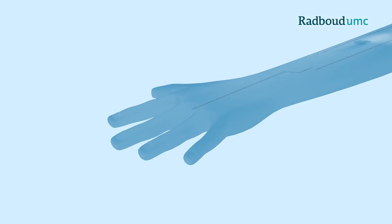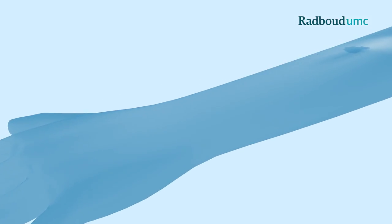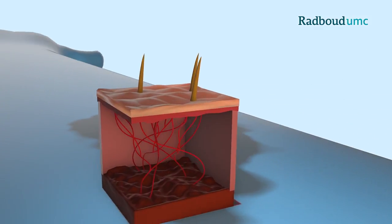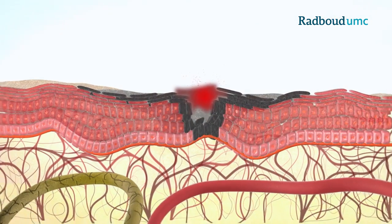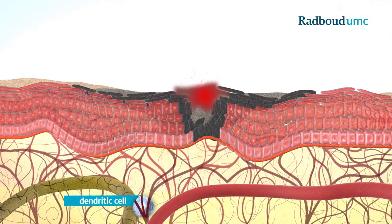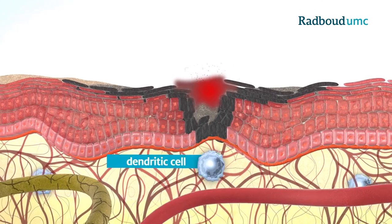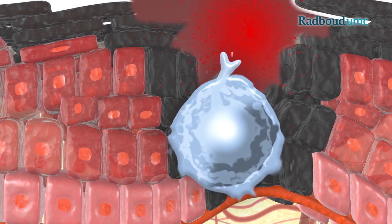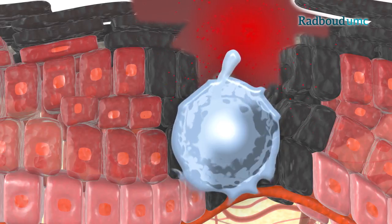One of the first cells of the immune system that make contact with a tumor are dendritic cells. These cells are constantly crawling through the body, scanning for irregularities. Upon encounter of a dying melanoma cell, dendritic cells take up a sample of the cell, called tumor antigen, which later serves as a way to recognize other tumor cells.